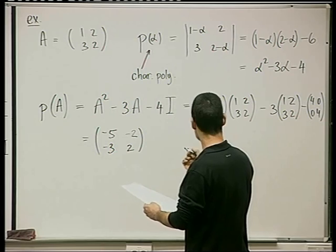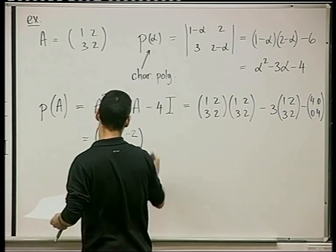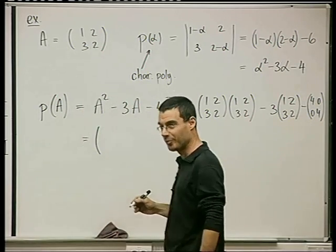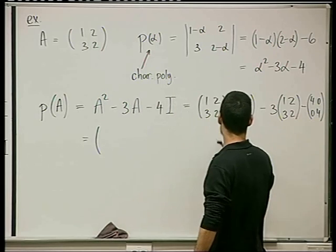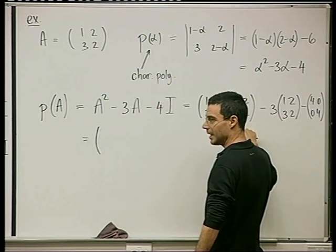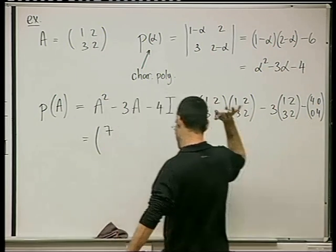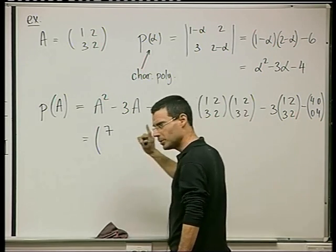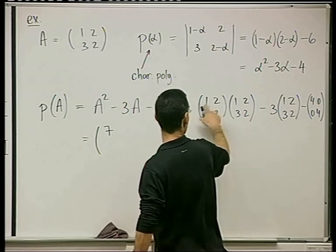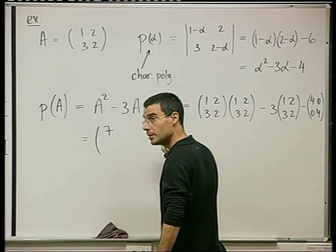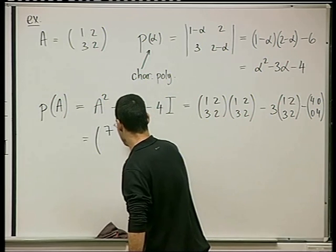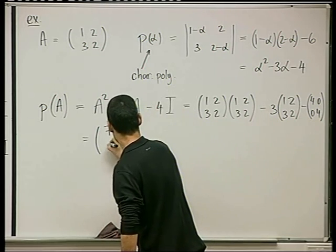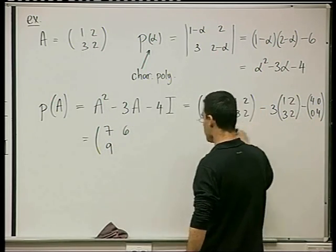I made an error — a student points out I was computing a determinant instead of a matrix product. So A squared is [[1+6, 2+4], [3+6, 6+4]] = [[7, 6], [9, 10]]. And 3A is [[3, 6], [9, 6]].